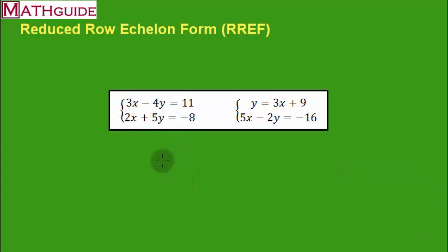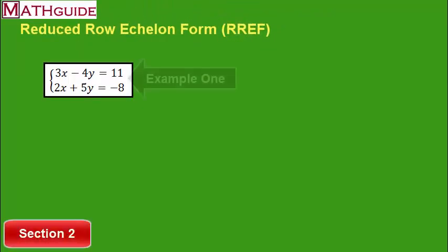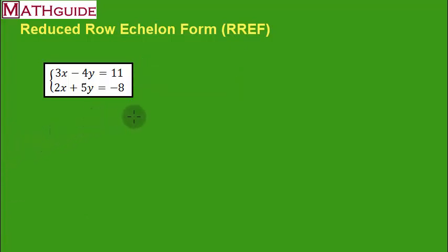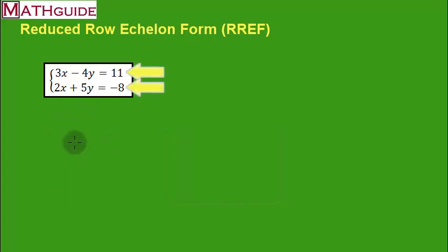Now that we know what it's supposed to look like, let's do an example and I'll show you how to use the calculator. Here's our first example. We have this system of equations and everything's in a nice form: X's in the first column, Y's in the second, numbers all alone. We're going to plug this into a graphing calculator — I'm going to use the Texas Instruments TI-Nspire.